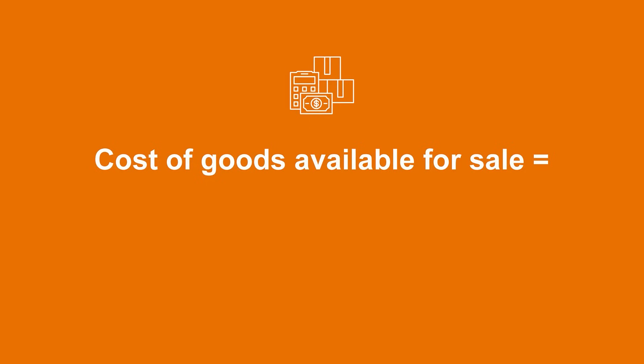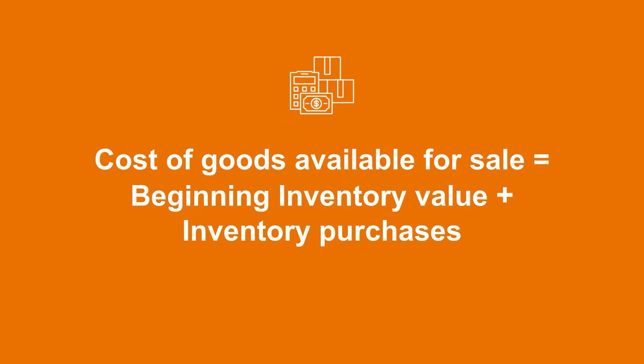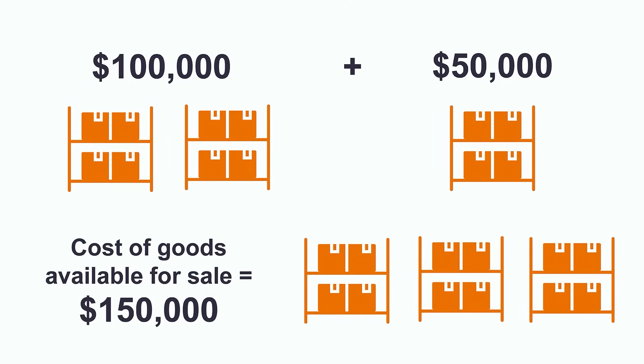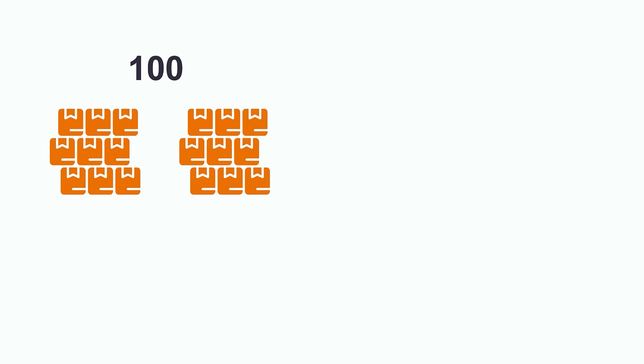Cost of goods available for sale is the value of all of the inventory that the company has ready and available to sell to their customers throughout the period. This is calculated using the formula: cost of goods available for sale equals beginning inventory value plus inventory purchases. For example, if a company had $100,000 of inventory at the start of January and purchased another $50,000 of inventory throughout the month, the cost of goods available for sale that month would be $150,000. Units available for sale would be the total number of units that the company has in their inventory ready to sell that period, calculated by adding beginning units in inventory and the units purchased during the period.